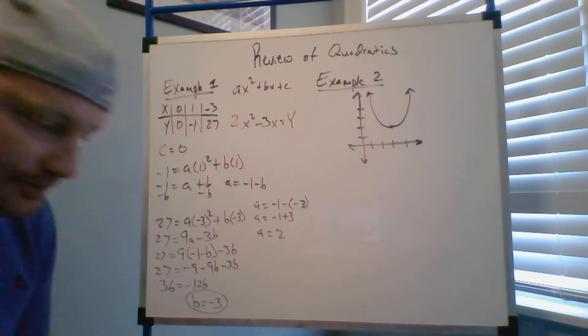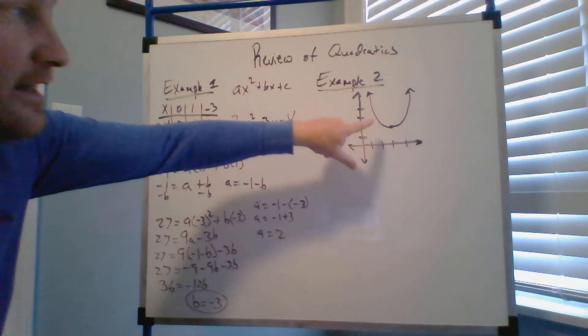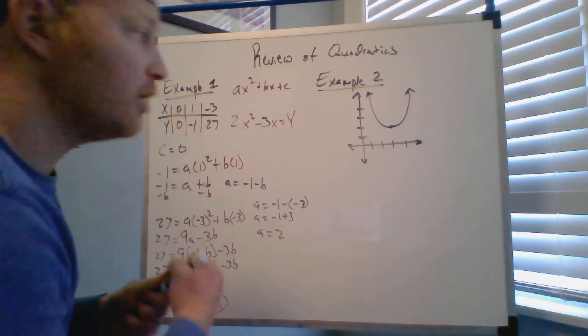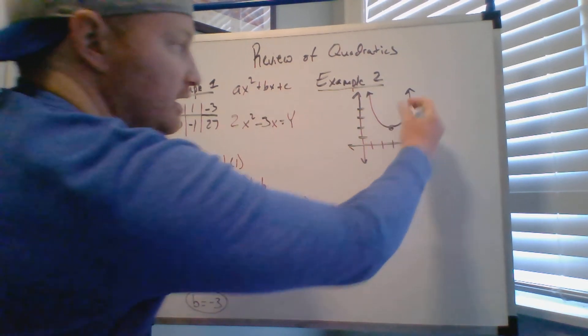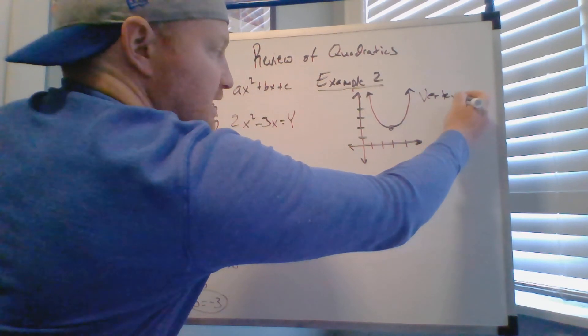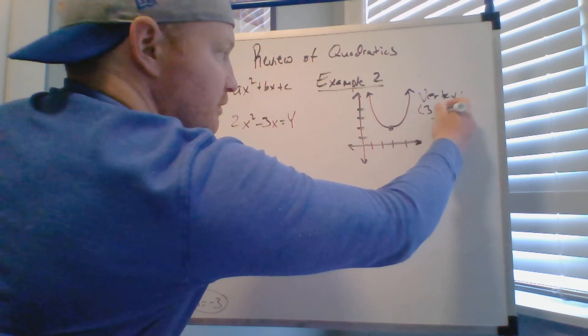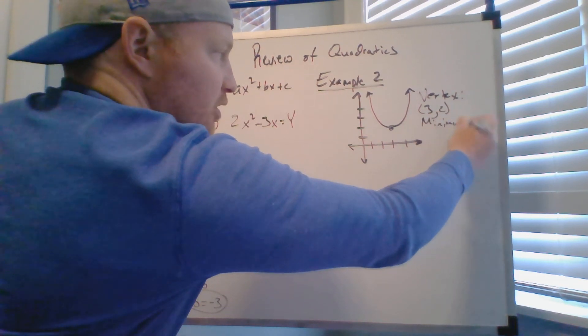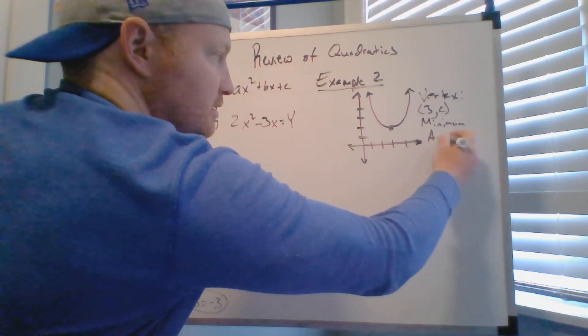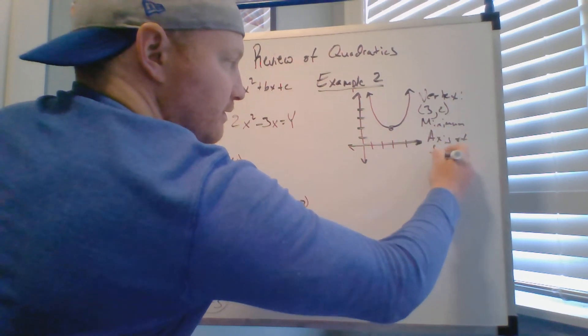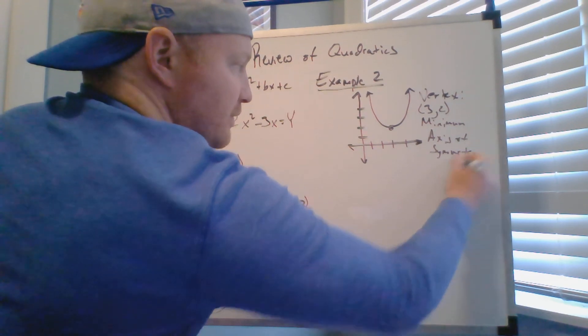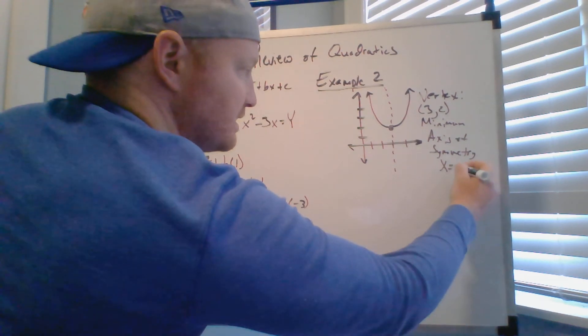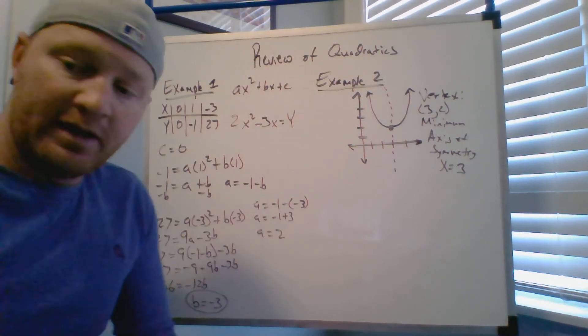I'm bringing back something we did last week, making sure you haven't forgotten about it. I want you guys to identify the vertex and the axis of symmetry by looking at a graph. The vertex is right there at this point, so you would identify this as vertex is at three comma two, and you would call this a minimum because it opens up.